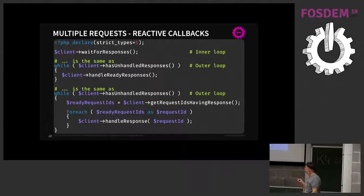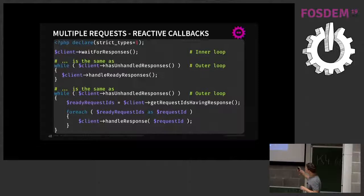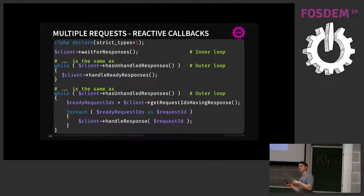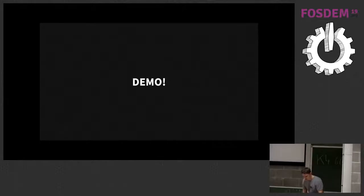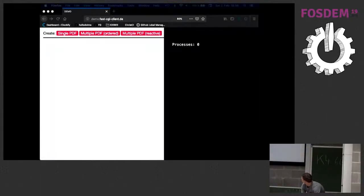To summarize: you can call waitForAllResponses or loop with hasUnhandledResponses and handleReadyResponses. There's a naming convention: 'read' methods try to read the response directly and return it, while 'handle' methods invoke the registered callbacks. If you've added callbacks, you need to use the handle methods.